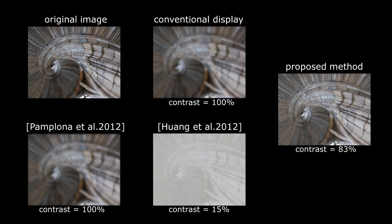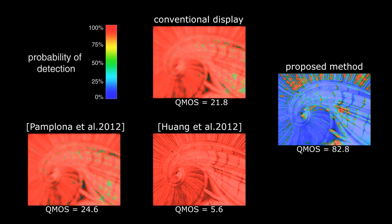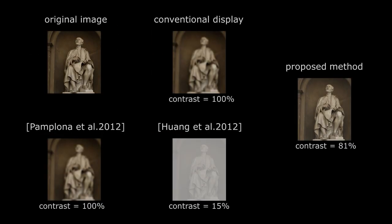In this second example, our result has five times the contrast, and more than three times the score. And now, here is the final example.